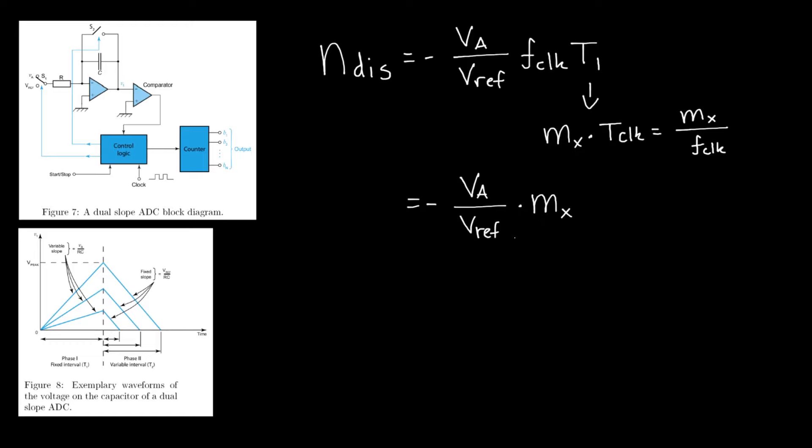Computing the resolution now comes down to two steps. The first step is finding out what input voltage VA we need to get the maximum number that we can count with this ADC, and then dividing the maximum input voltage by the maximum number that we can count, and that will give us the LSB step.